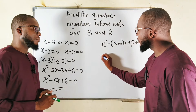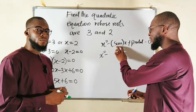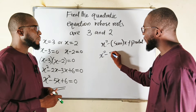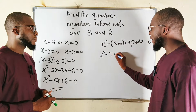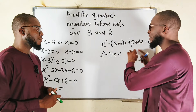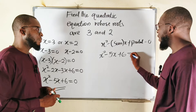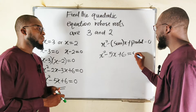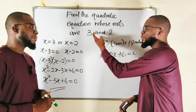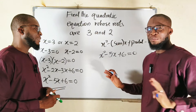So let's plug everything inside. This is x squared minus the sum, that is 3 plus 2, which gives us 5, and you multiply by x. Then you add the product, that is 3 times 2, which is equal to 6. And everything is equal to 0. Hence, this is the quadratic equation whose roots are 3 and positive 2. As simple as that.